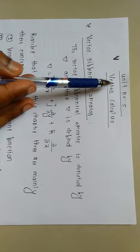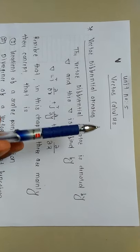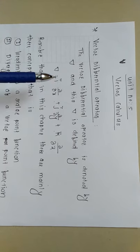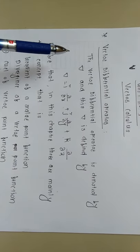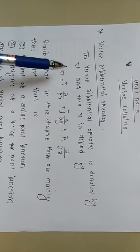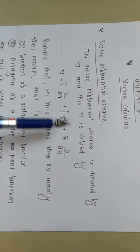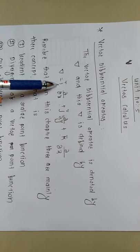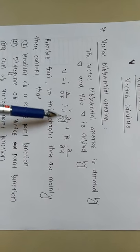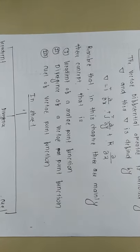Good morning. We will start unit number five, that is vector calculus. Gondkar sir and Nadab sir have already given some introduction about this unit. The first topic is the vector differential operator, denoted by del, defined as del equals i ∂/∂x plus j ∂/∂y plus k ∂/∂z. This is the basic definition of the vector differential operator.